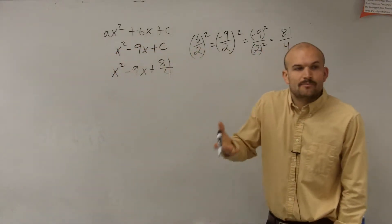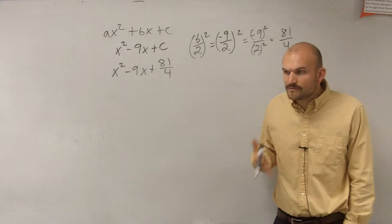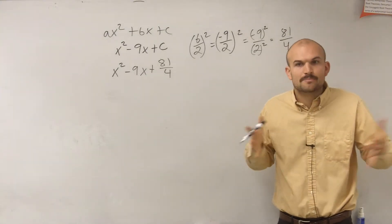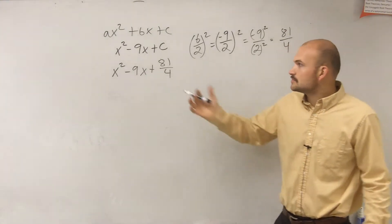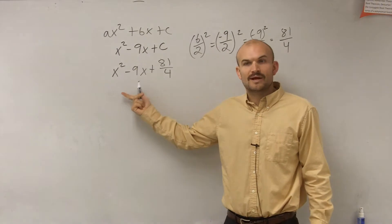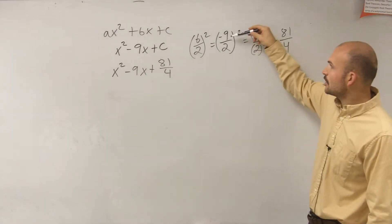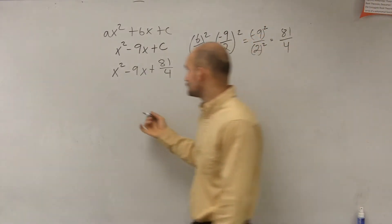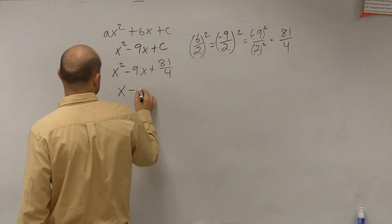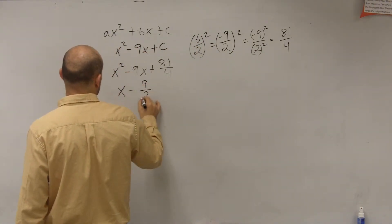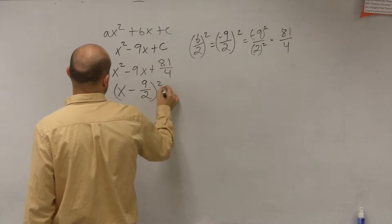Now, why do we want a perfect square trinomial? We want a perfect square trinomial so we can write it as a perfect square. So we need to say, how can we write this as a perfect square? Well, what we do is we take our b divided by 2. So we have x minus 9 divided by 2, squared.